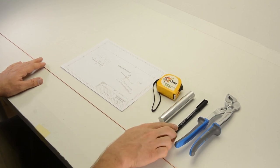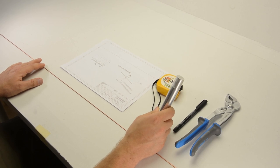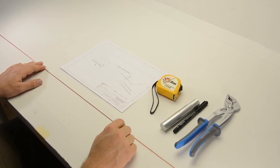pliers, a marker, any kind of rod of the appropriate diameter for winding the loops, and a ruler to measure distances.